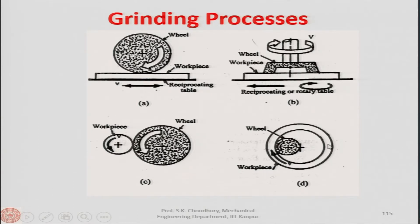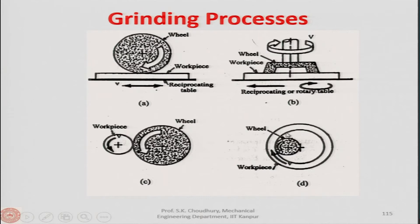Next are internal and external cylindrical grinding. In external cylindrical grinding, the workpiece and the wheel both rotate in the same direction. In internal cylindrical grinding, a wheel is placed inside the workpiece to grind the inner hole. The workpiece rotates clockwise while the wheel rotates anti-clockwise. The axis of the grinding wheel and the axis of the workpiece are identified separately.